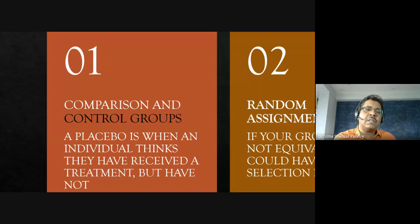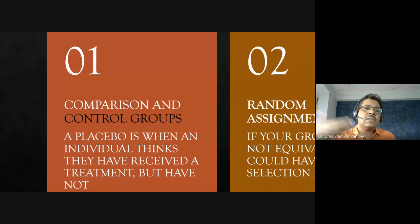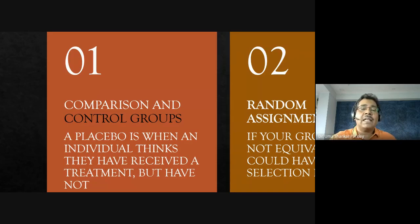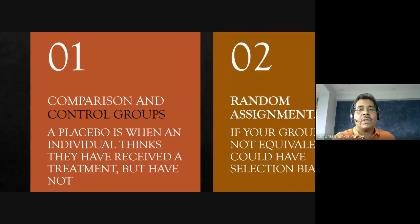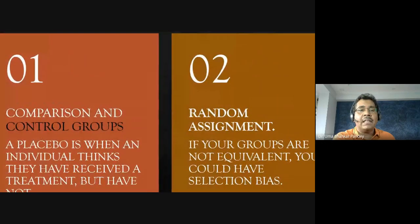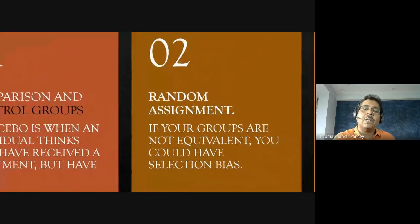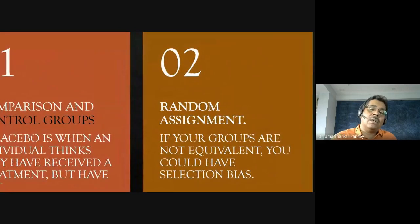Often in the control group, participants are given a placebo — for example, the experimental group sees violent content while the control group sees non-violent content. Both groups think they have received a treatment. This is important because if one group sees nothing and the other sees content, there will be design errors. Random assignment is critical to prevent selection bias.